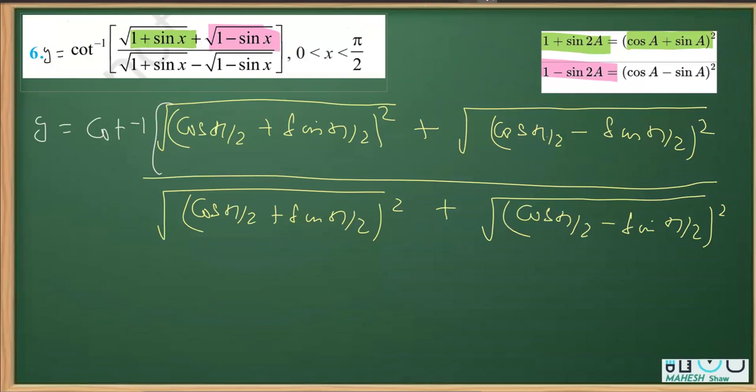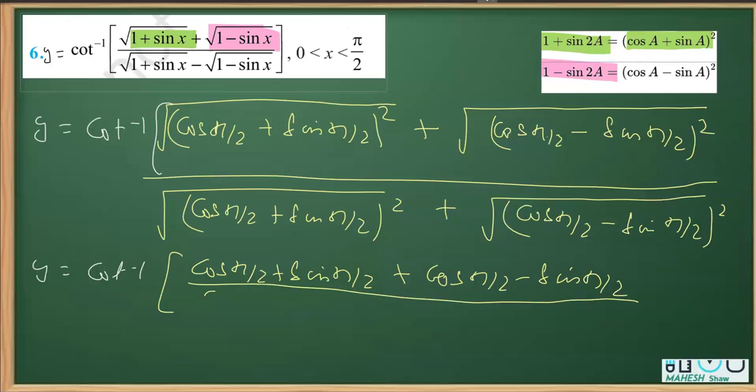Now we can clearly see that in this case, the square and the under root get cancelled. So we will get cot inverse, eliminating the under root and square, cos x by 2 plus sin x by 2 plus cos x by 2 minus sin x by 2, divided by cos x by 2 plus sin x by 2.